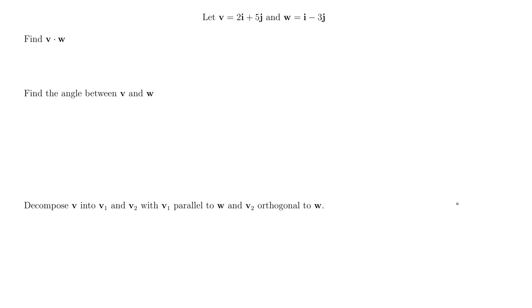I'd like to show you a couple applications of the dot product. Here I have two vectors: v is 2i plus 5j, and w is i minus 3j. First, let's just compute the dot product — make sure we all know how to do that.